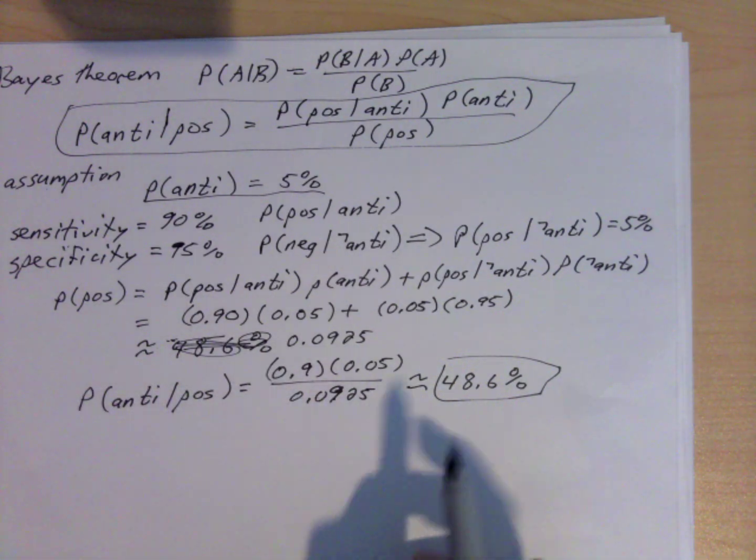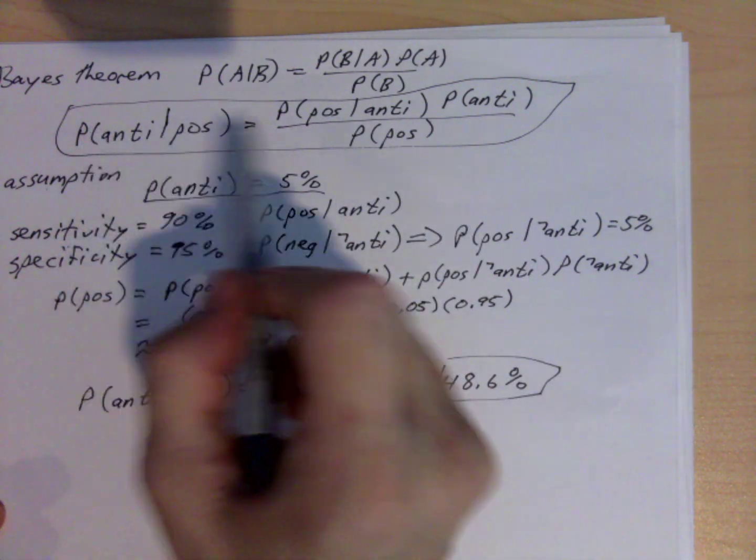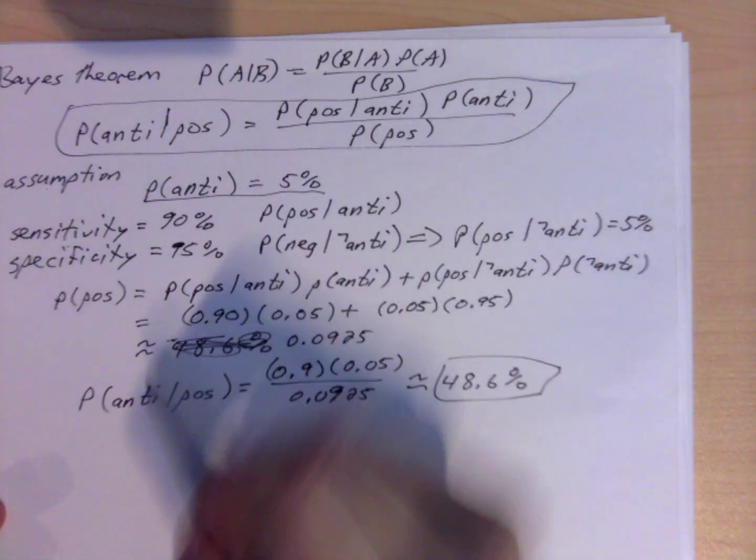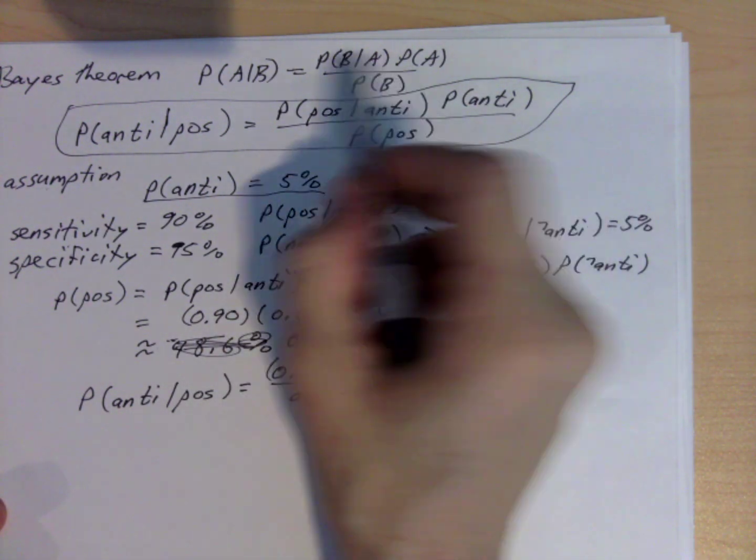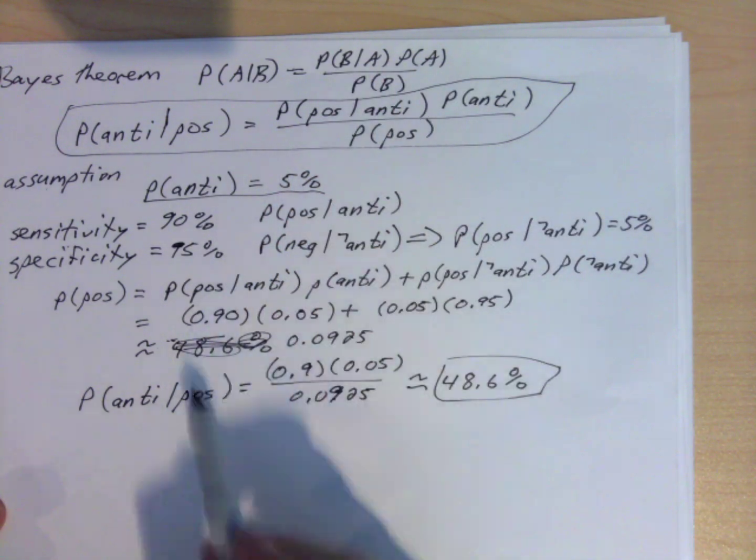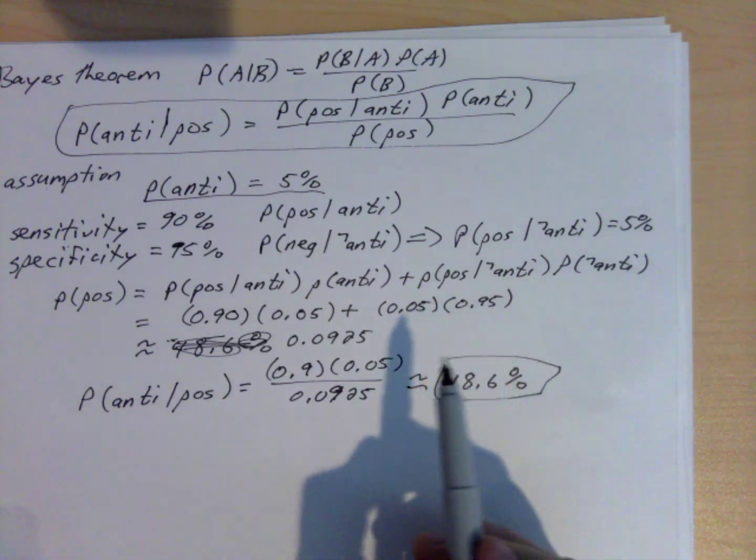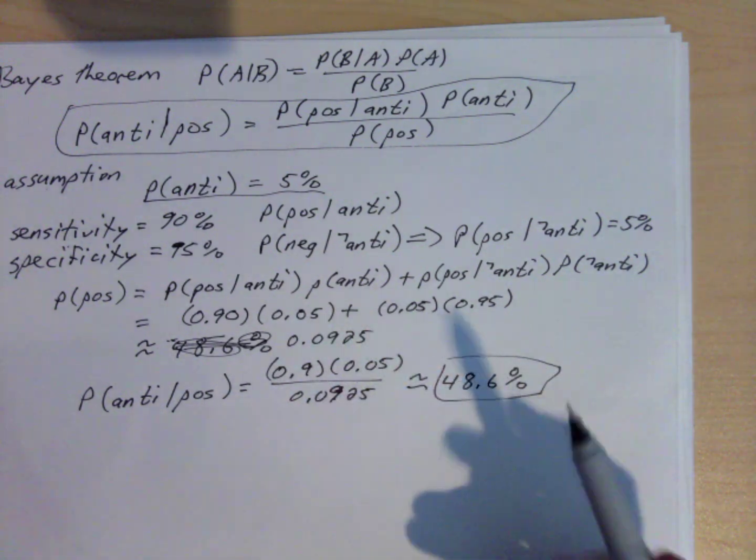Now I actually prefer using a tree to do the calculations, because one, I don't have to try to remember what the right formulas are. I didn't have trouble with this, but figuring out the denominator, actually I used the tree to come up with what the formula was for this. But also it's easier for me to see and understand how the numbers work. So let's look at the tree version of this.